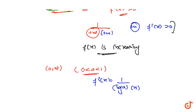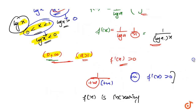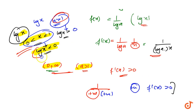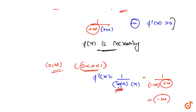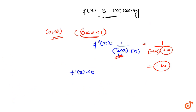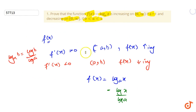f'(x) = 1/(log(a) · x). Now x ranges from 0 to infinity, so x is always positive. The condition is a between 0 and 1, and for 0 < a < 1, log(a) is less than 0, meaning it's negative. So negative × positive gives a negative value, meaning f'(x) < 0. Therefore f(x) is decreasing in the interval (0, ∞) when a is between 0 and 1. Hence proved.